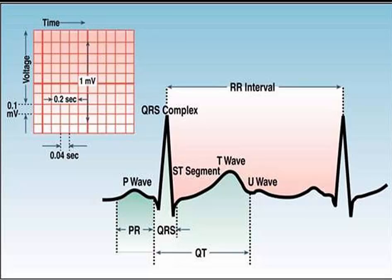The QRS duration represents ventricular muscle depolarization. The QT interval is the duration of ventricular depolarization and repolarization. The RR interval is the duration of the ventricular cardiac cycle and is an indicator of ventricular rate. The PP interval is the duration of the atrial cycle and an indicator of the atrial rate.